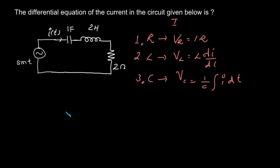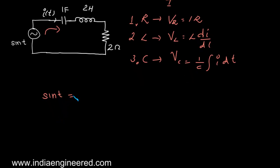Now what we are going to do is write KVL in this circuit. So that is sine t equals the voltage across the capacitor plus the voltage across the inductor plus the voltage across the resistor.